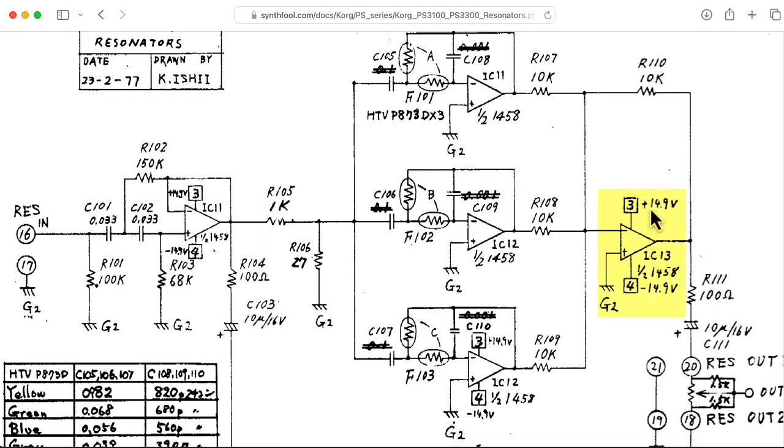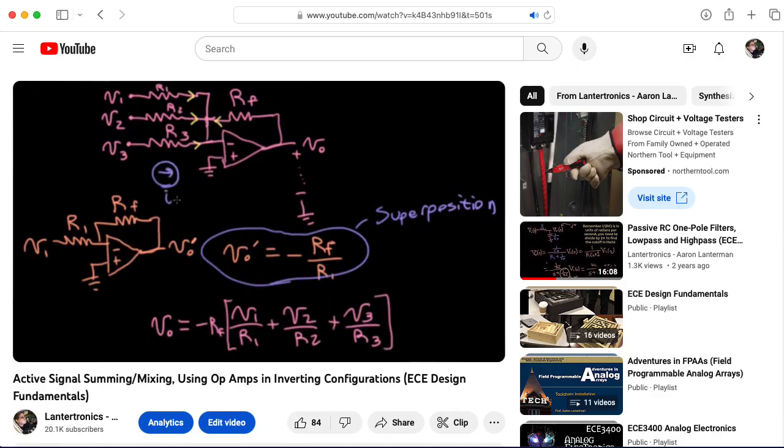The op amp here, IC13, is operating in an inverting mixer configuration, and the feedback and the input resistors are all the same. So it's really just adding up the outputs of the filters and inverting the signal on the way. If you're not familiar with this op amp configuration, you can check out the lecture video I have on the topic.